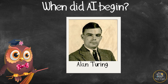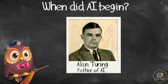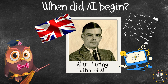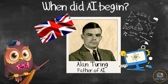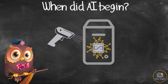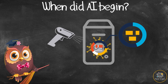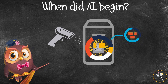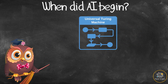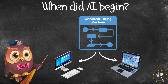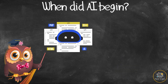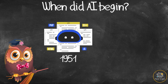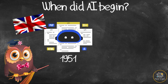When did AI begin? Alan Turing is known as the father of AI. He was an English mathematician and computer scientist. In 1935, Turing described a machine that had a limitless memory and a scanner that could read the data in the memory and create more data from what it had learned. Turing's idea is now known as the universal Turing machine, on which all modern computers are based.